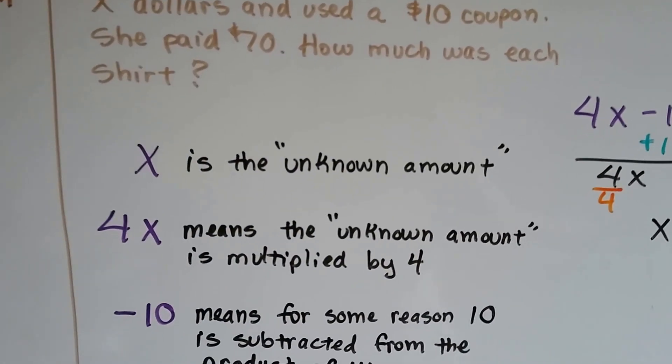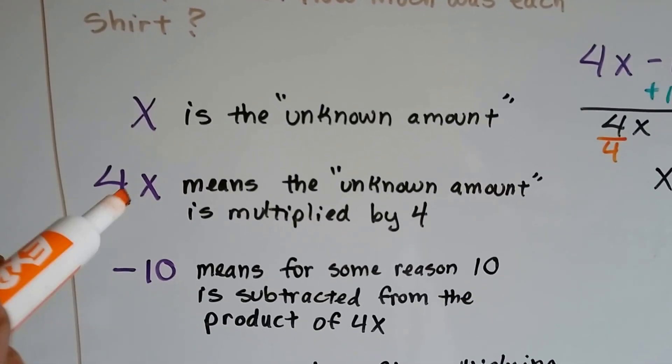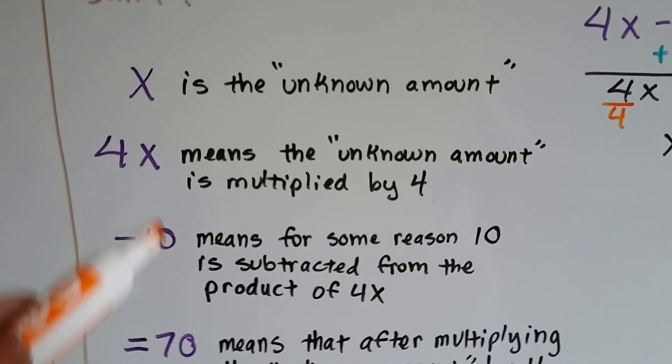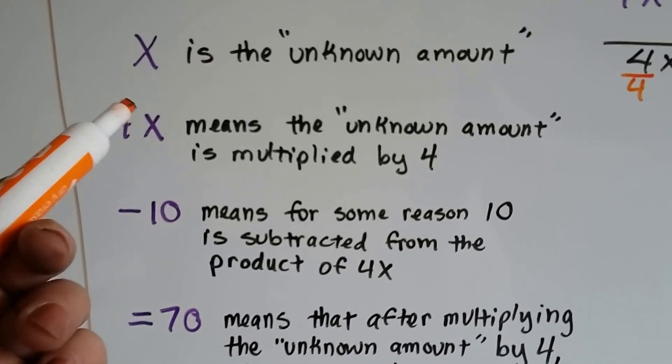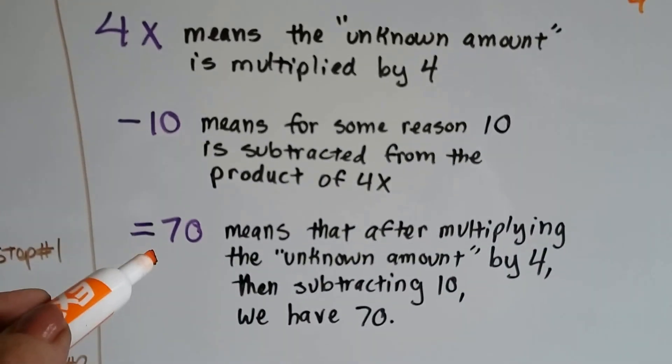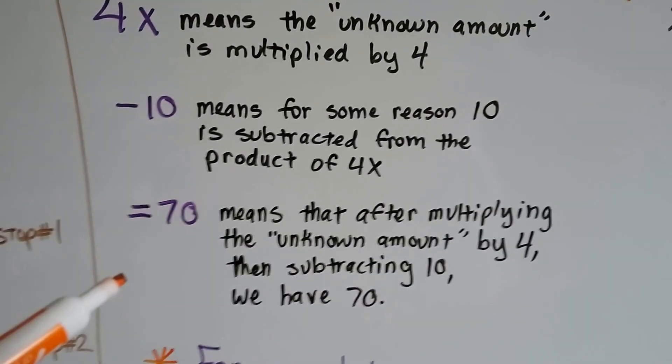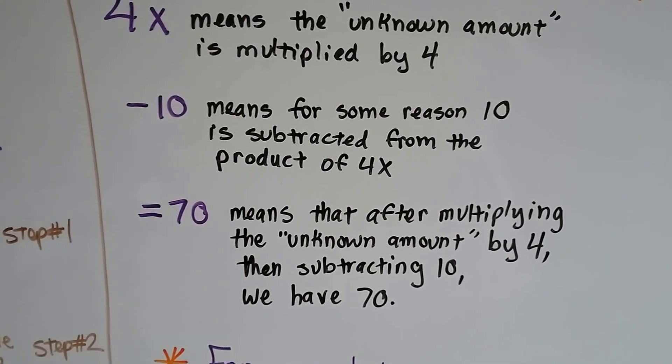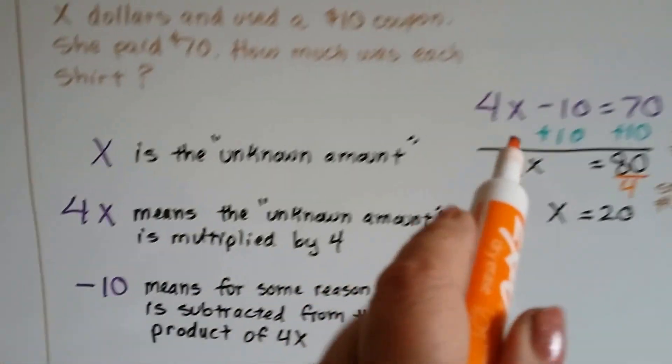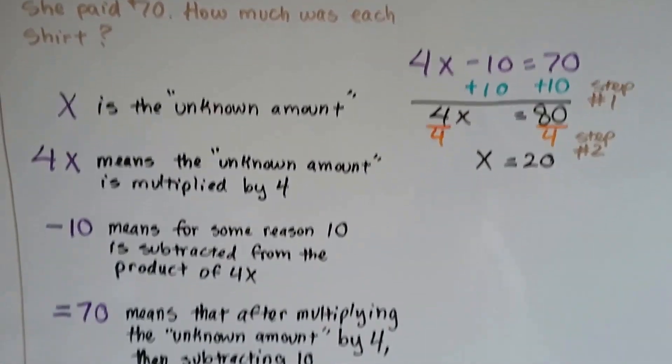The x is the unknown amount. 4x means the unknown amount is multiplied by 4. The minus 10 means, for some reason, 10 is subtracted from the product of 4x. And the equals 70 means that after multiplying the unknown number by 4 and subtracting that 10, we have 70 left over. So that's how we end up with 4x minus 10 equals 70. See?